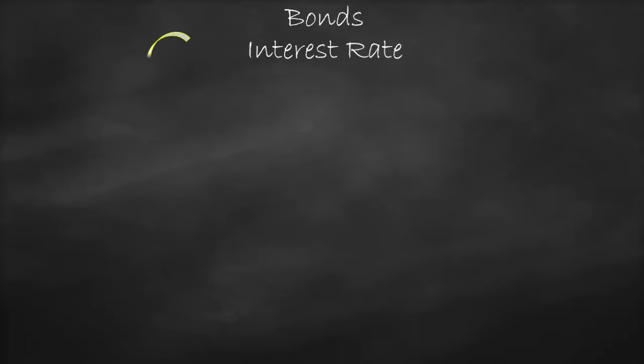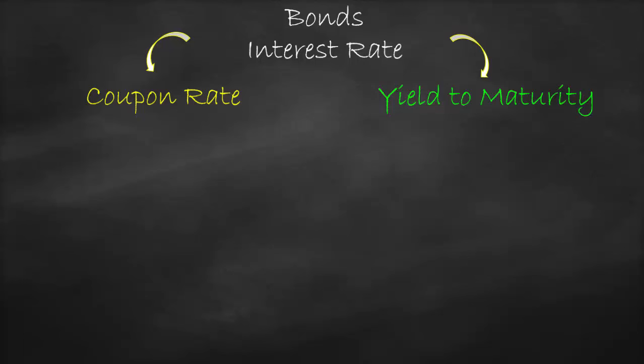When we talk about bonds, we have two types of interest rate: we have coupon rate and we have yield to maturity. Coupon rate is the rate that we receive, while yield to maturity is our opportunity cost — the rate that we sacrifice, which is the discount rate.